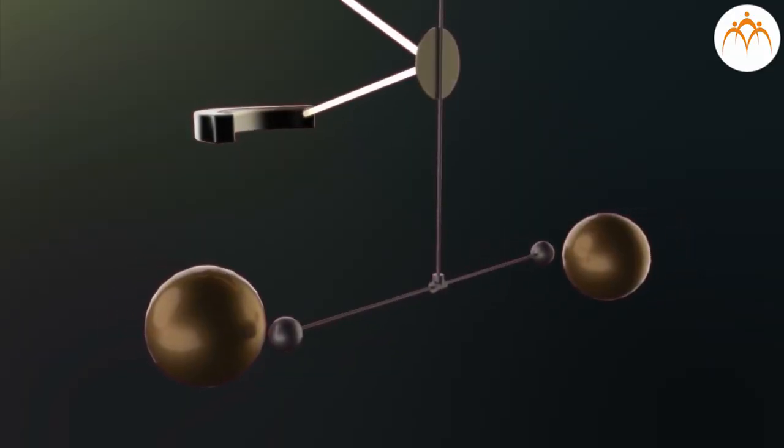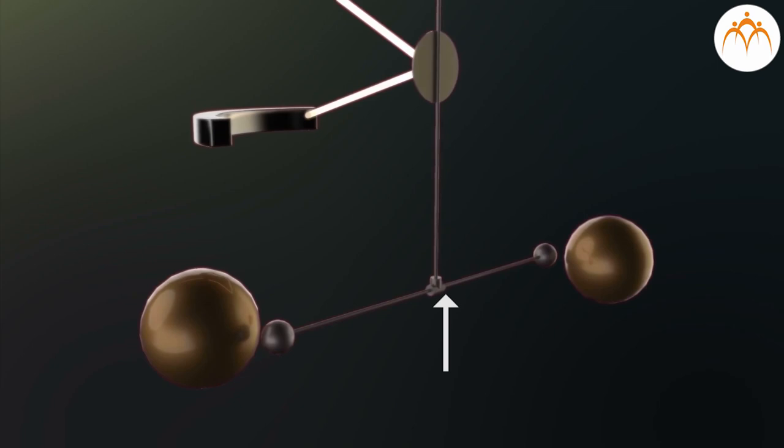He used a torsion balance or pendulum made of a wooden rod 6 feet or 1.8 meters horizontally suspended from a wire with 2 inch or 51 millimeters diameter, 1.61 pounds or 0.73 kilograms lead spheres, each attached to each end.